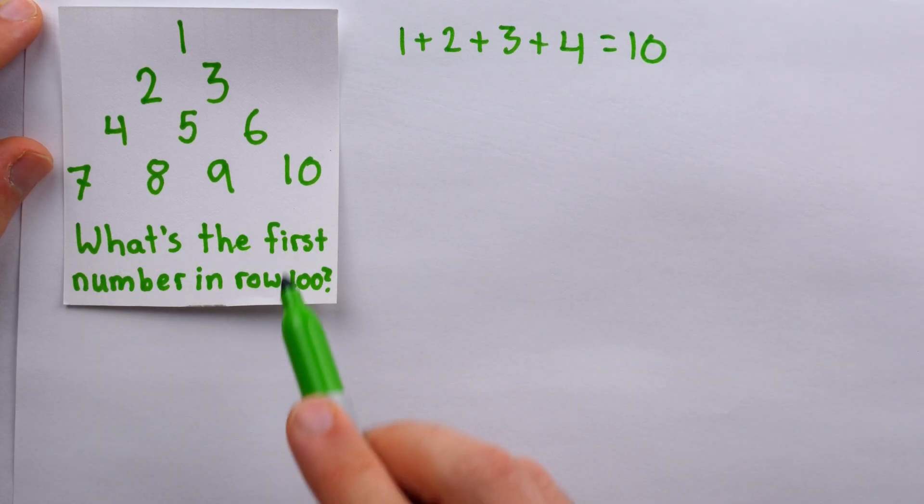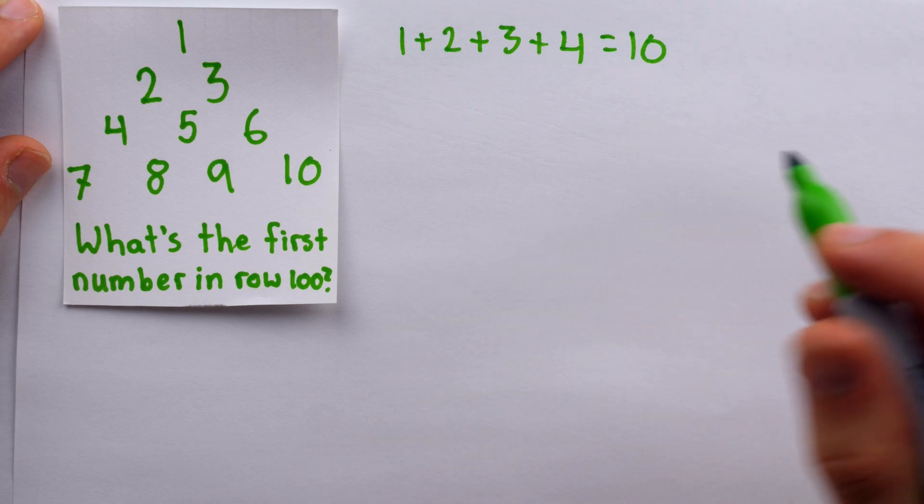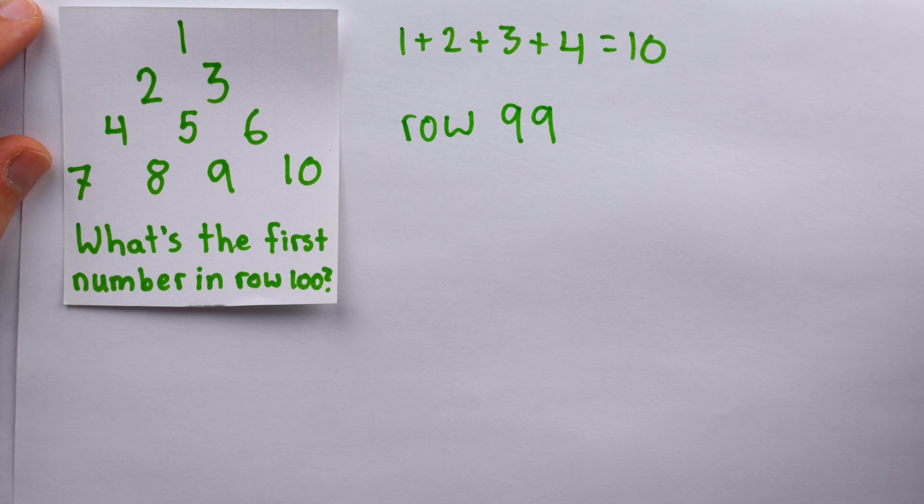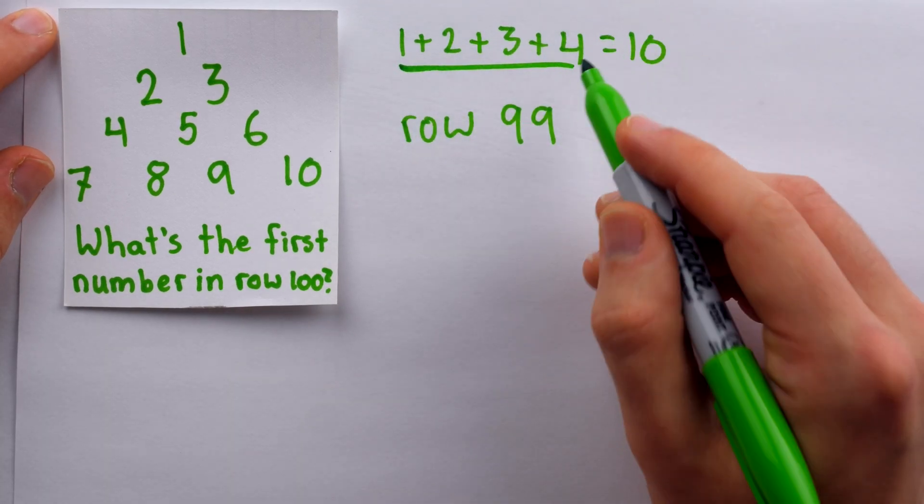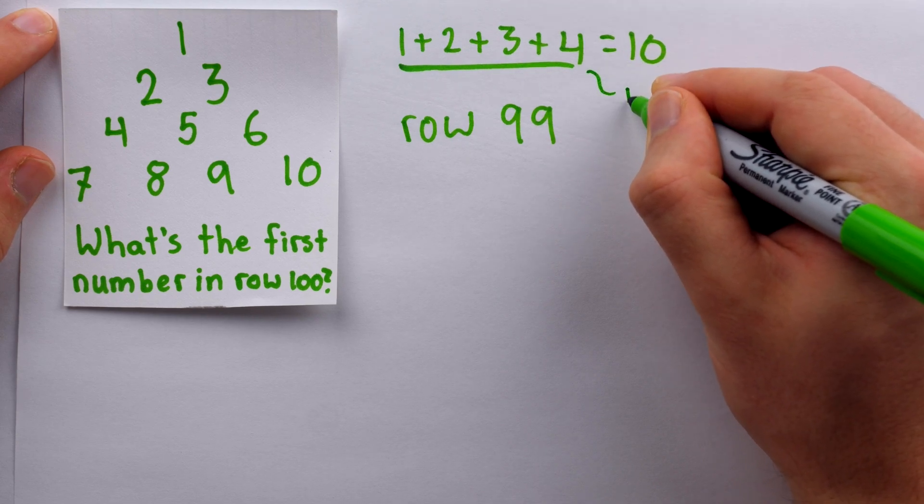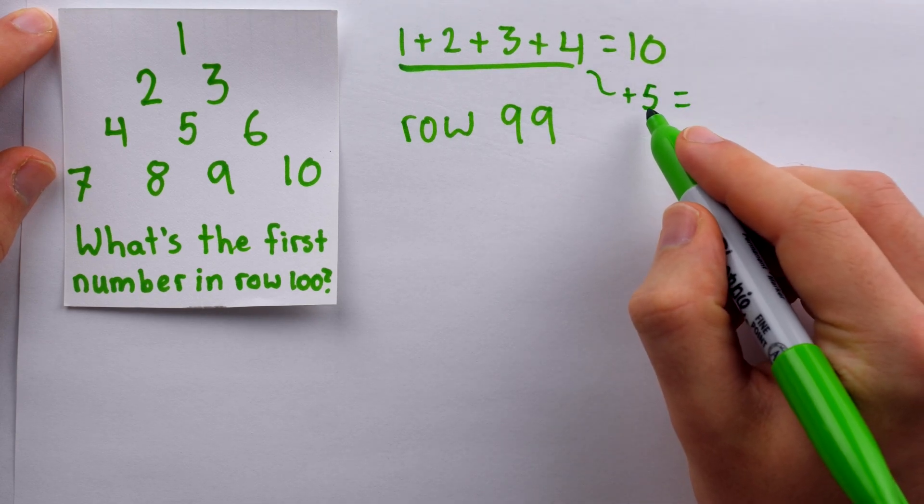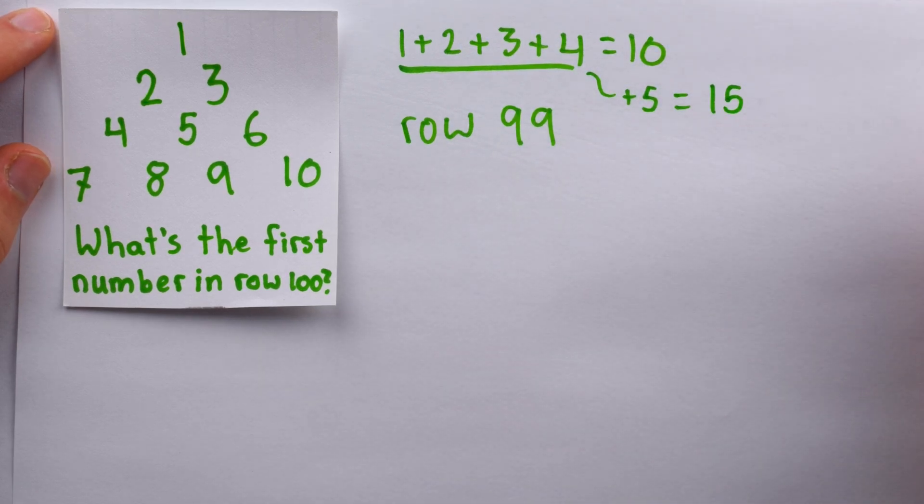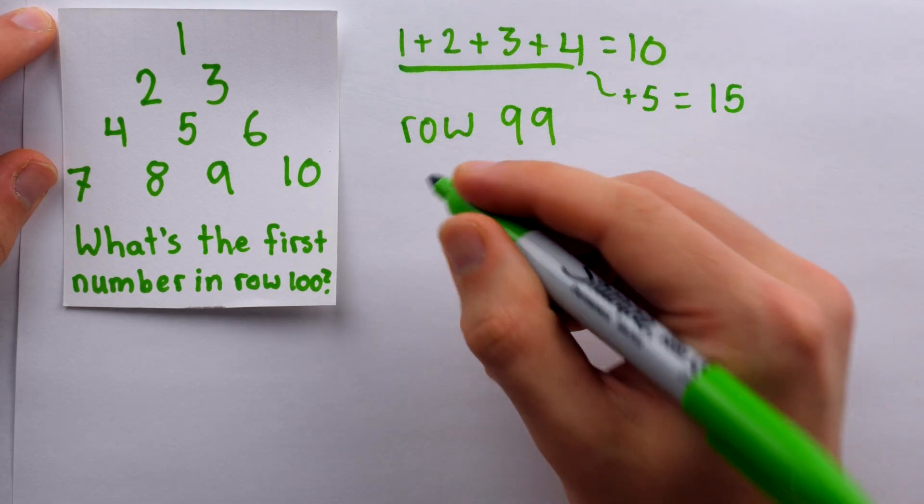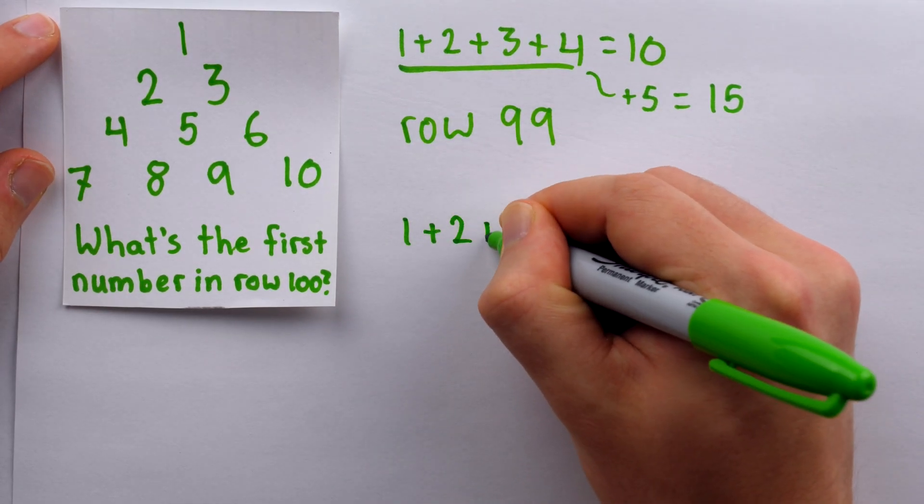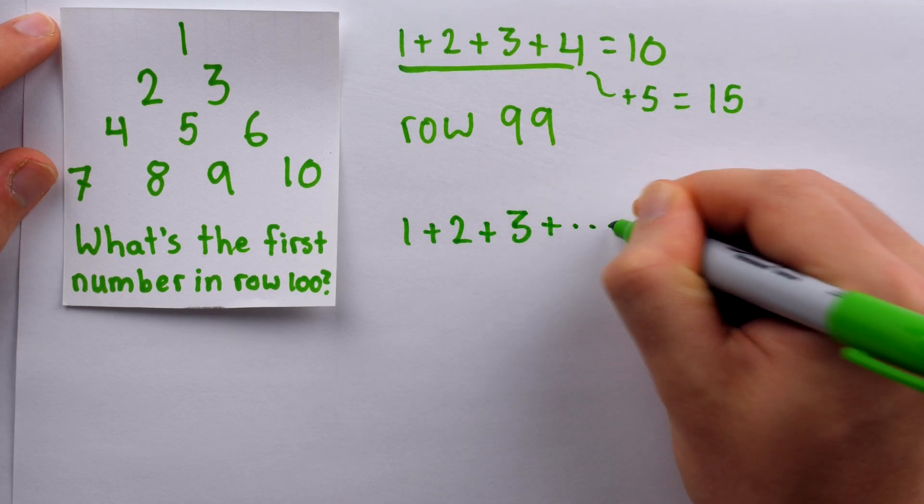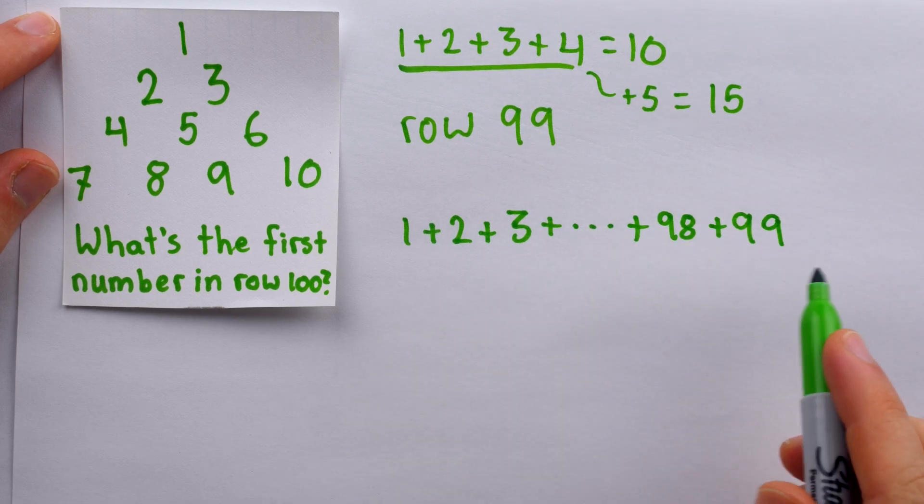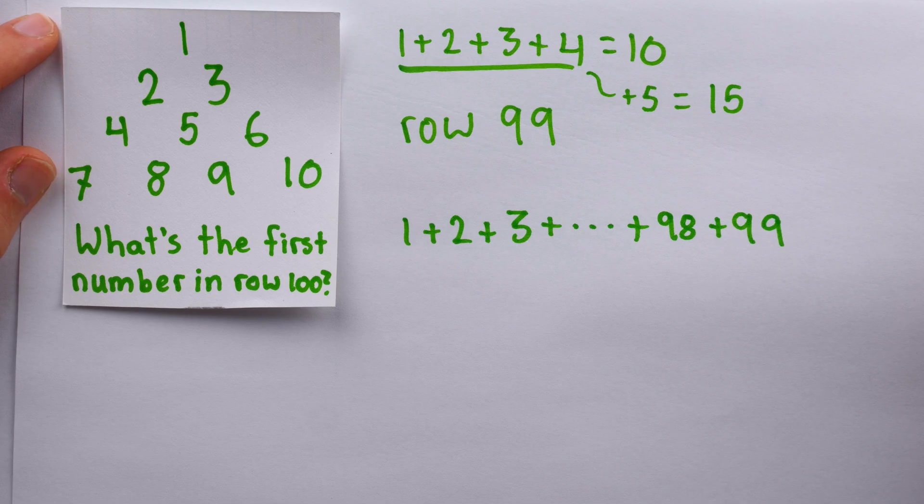So how do we find the first number in row 100? Well, we'll figure out what the last number is in row 99, and then just add one to that. So to get the number at the end of row 99, we have a lot of addition to do. We need to do one plus two plus three, all the way up to plus 98, and finally plus 99, adding up the lengths of all rows up to the 99th row to calculate that last number.